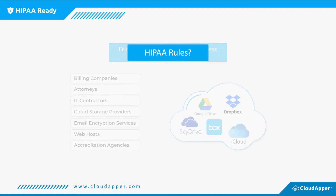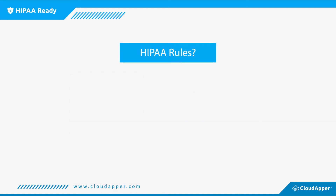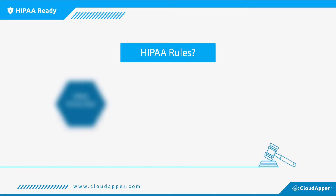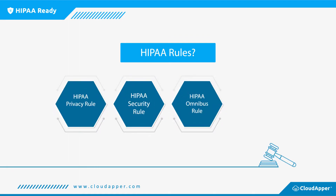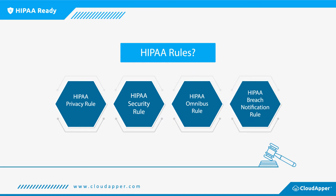There are four categories of HIPAA rules that need to be complied with, namely the HIPAA Privacy Rule, HIPAA Security Rule, HIPAA Omnibus Rule, as well as the HIPAA Breach Notification Rule.